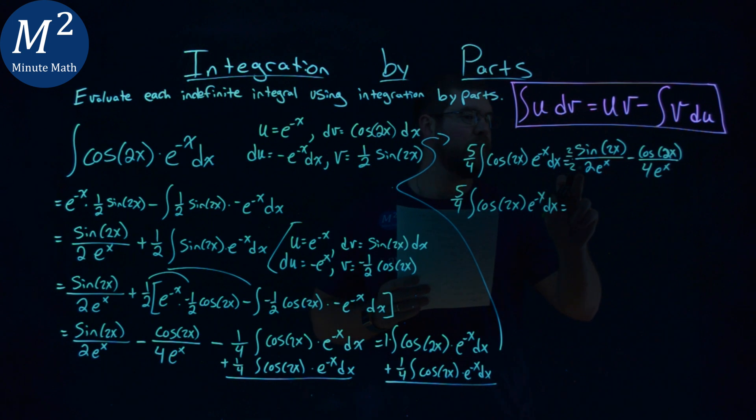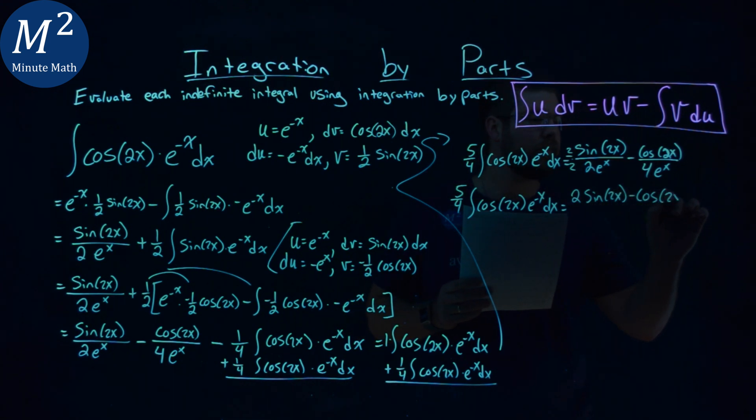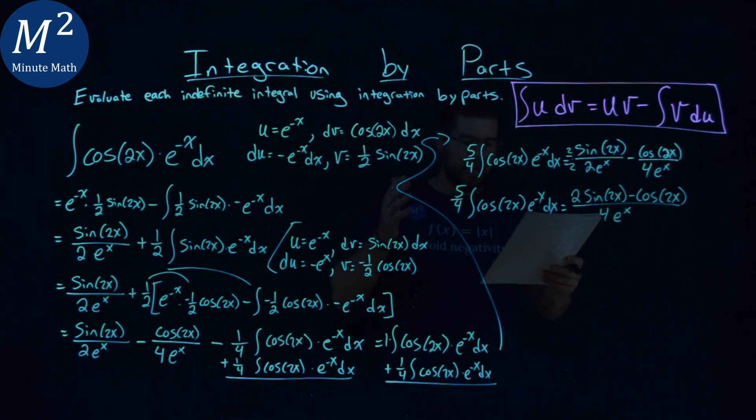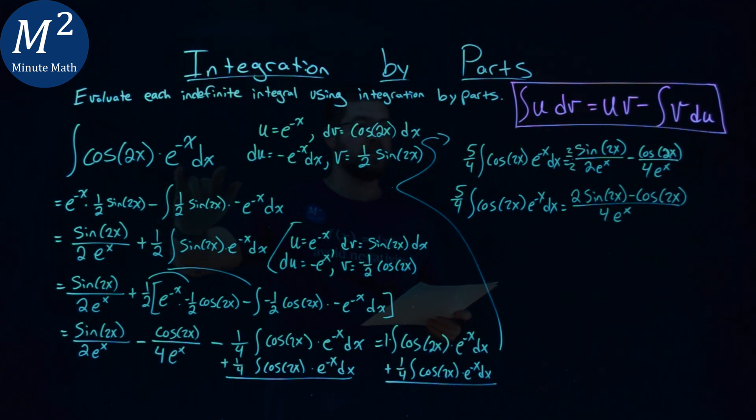we then combine 2 times 2 is 4, 4 e to the x to the denominator. So we have 2 sine of 2x minus cosine of 2x over 4 e to the x power.